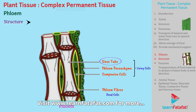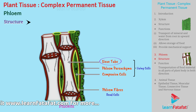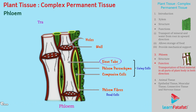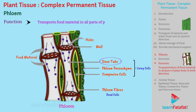Sieve tubes are tube-like structures, and the walls of these tubes have holes in them. Phloem transports food material to all parts of the plant body. Hence, transportation takes place in both directions.